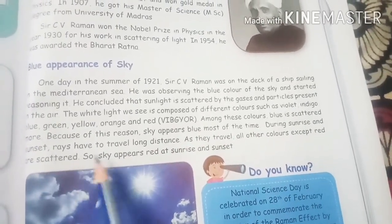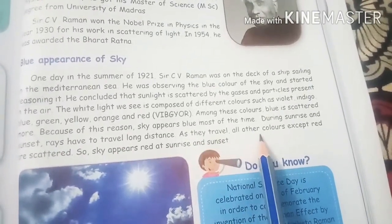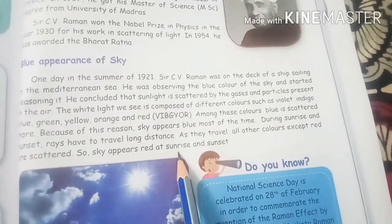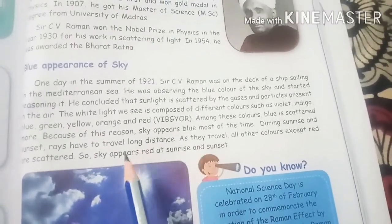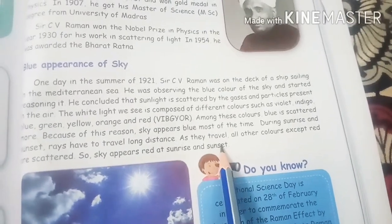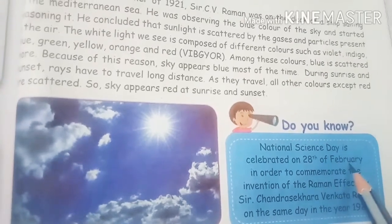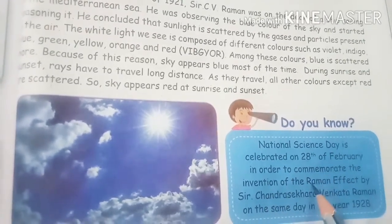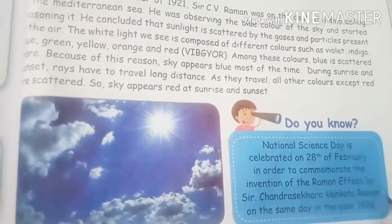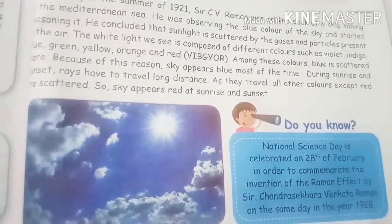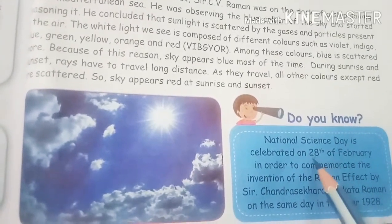During sunrise and sunset, rays have to travel a long distance, and as they travel, all other colors except red are scattered. So the sky appears red at sunrise and sunset. By this, he proved the scattering of light. National Science Day is celebrated on 28th February to commemorate the invention of the Raman Effect by Sir Chandrasekara Venkata Raman on the same day in the year 1928.